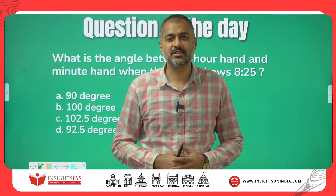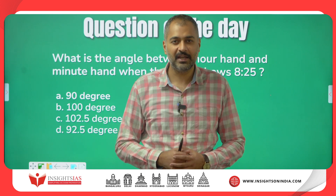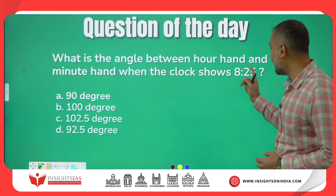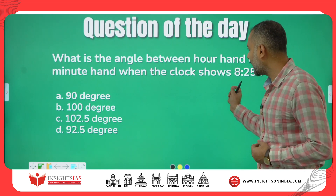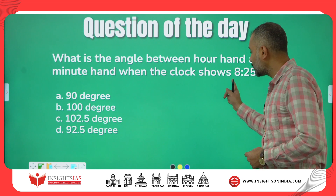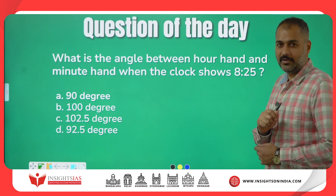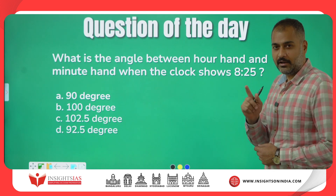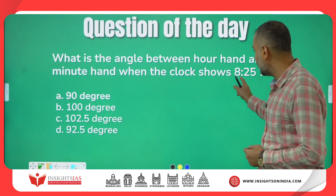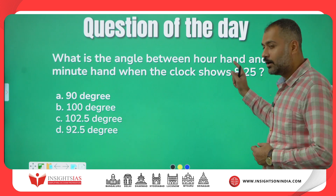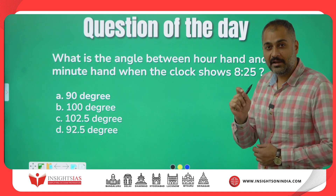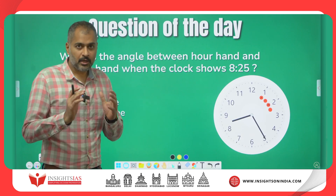The first question I am going to start with: in an analog clock, when the time is showing 8:25, what is the angle between the minute hand and the hour hand?